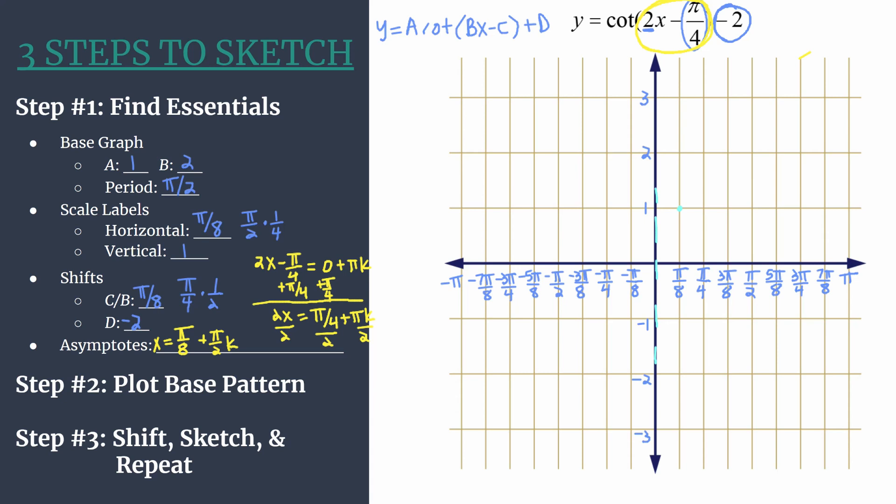We have an x-intercept, or 0, at the next horizontal tick mark moving to the right. So that's at π over 4. And then your final point in the base pattern will be at 3 π over 8, just that next or third horizontal tick mark to the right. To get the y-coordinate, just take the opposite value of a. So you can see one loose cycle here of cotangent, and this is our unshifted graph.